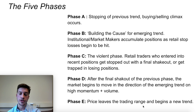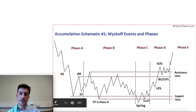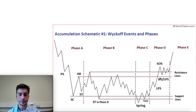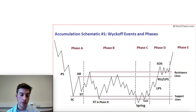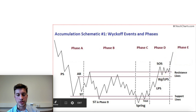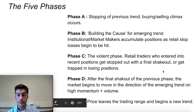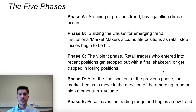Phase D occurs after the shakeout. We're beginning to see some signs of strength, the SOS, where price is beginning to ramp up on demand. However, retail is still going to be convinced that price is not going higher. If you read stock tweets, Twitter sentiment, order flow — all of these things — you're basically going to see retail traders convinced that price is just going to continue going lower, when in reality this is where price actually just goes higher. After phase D, we get phase E — where price leaves the trading range and begins a new uptrend.